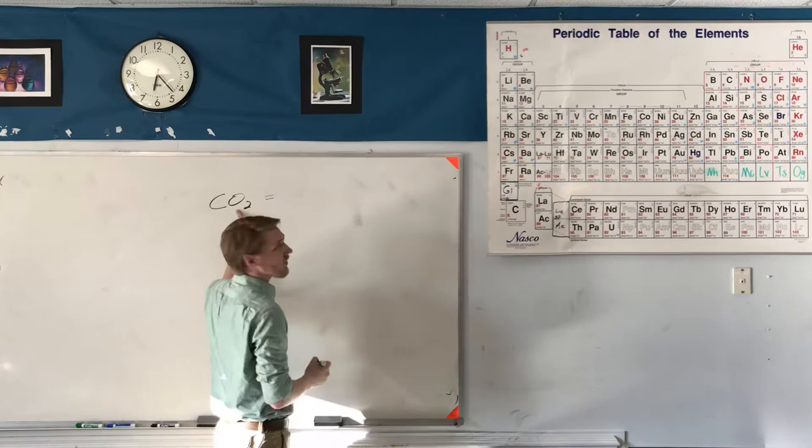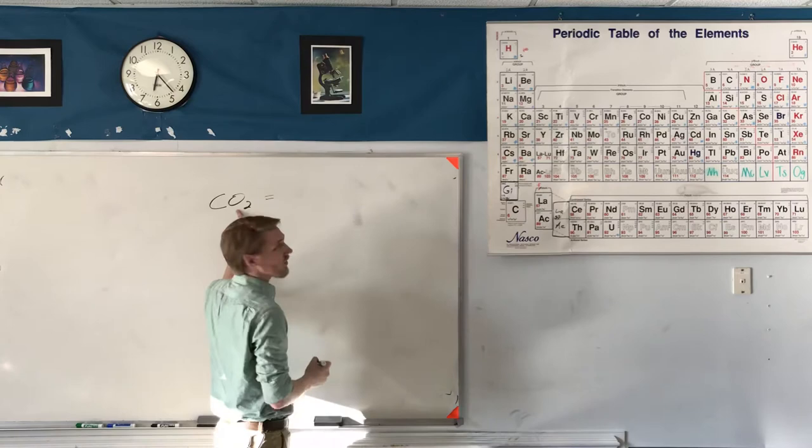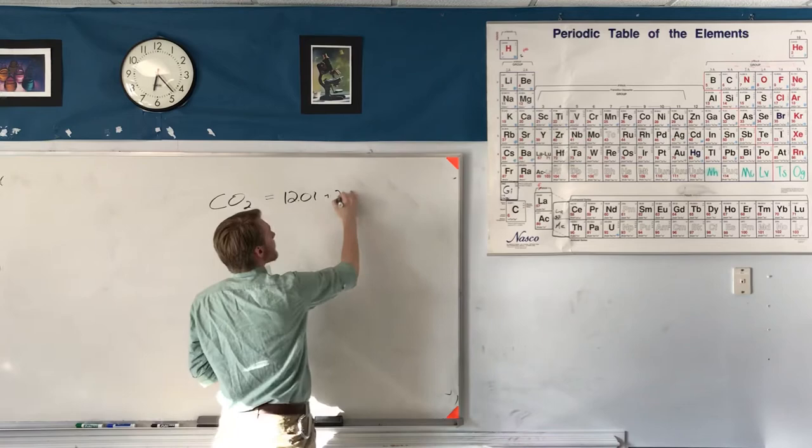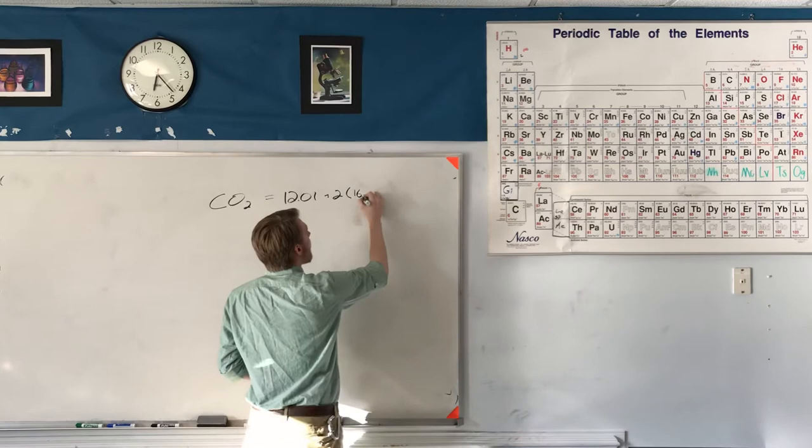CO2, its molar mass is going to be carbon plus two oxygens. Carbon is here on the periodic table so it has a molar mass of 12.01 grams per mole, and two oxygens has a mass of 16.00 grams per mole.